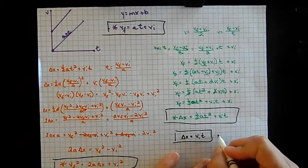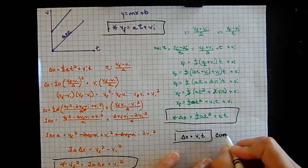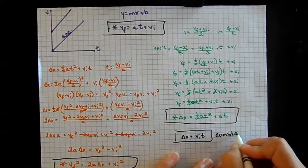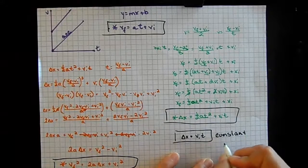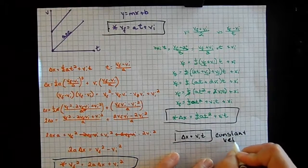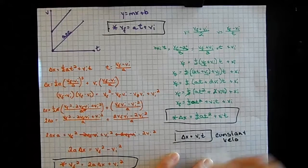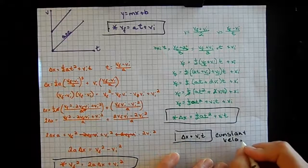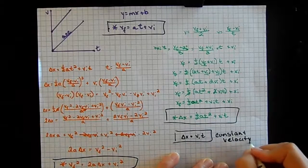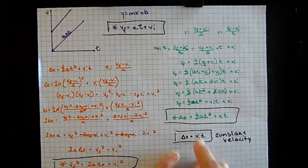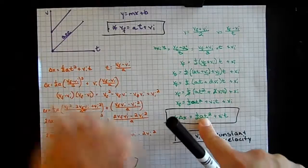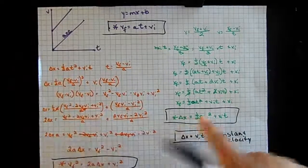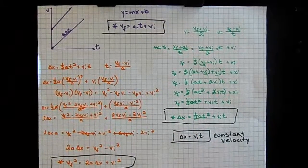The constant velocity equation — Δx = Vi·t — is for constant velocity only. You cannot use this if you have acceleration. The three kinematic equations with acceleration are for when you have a non-zero acceleration. You cannot use the constant velocity equation if the object is accelerating.